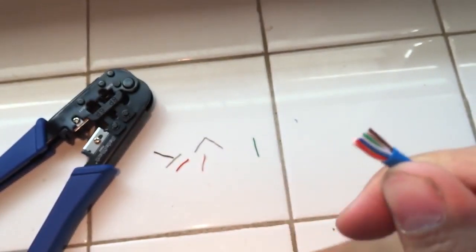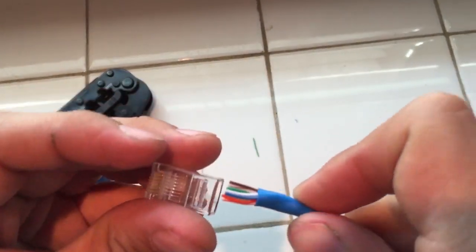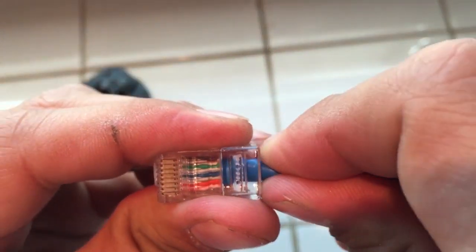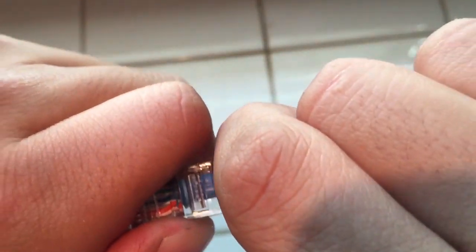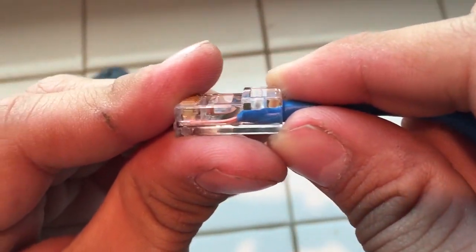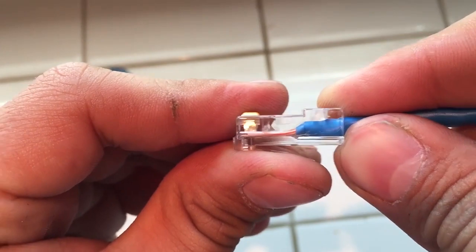After you're done making sure the order is correct, go ahead and put it in the RJ45 jack. The jack has little channels which allow the wires to go through. Make sure the wires go into the jack as far as possible, all the way to the end of it. In my case, I cut the wires too short, but it will still make contact with the pins.